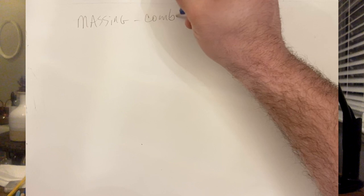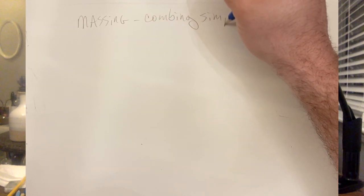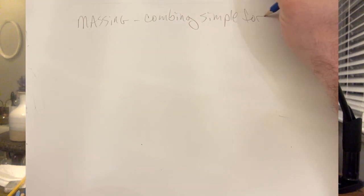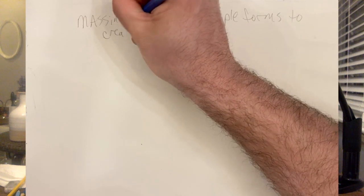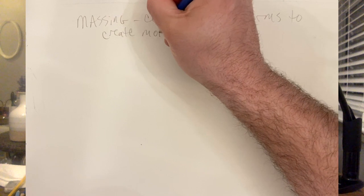Now just so you recall, massing is a term for combining simple forms to create more complex ones.